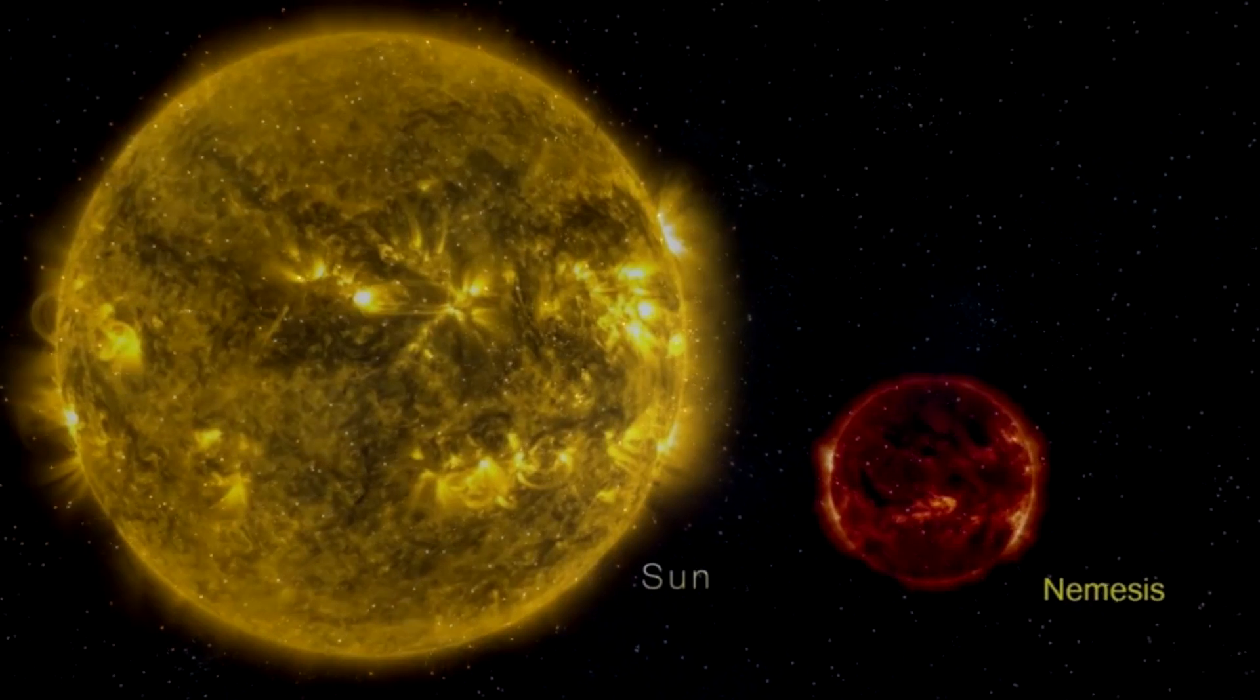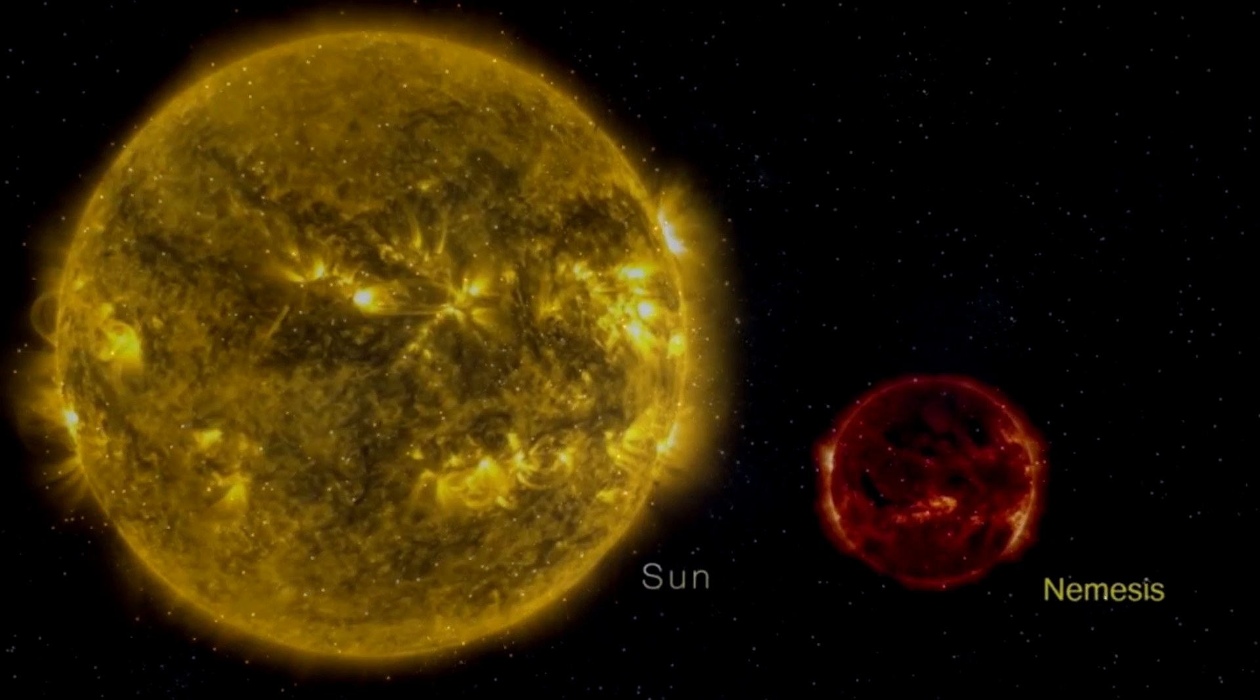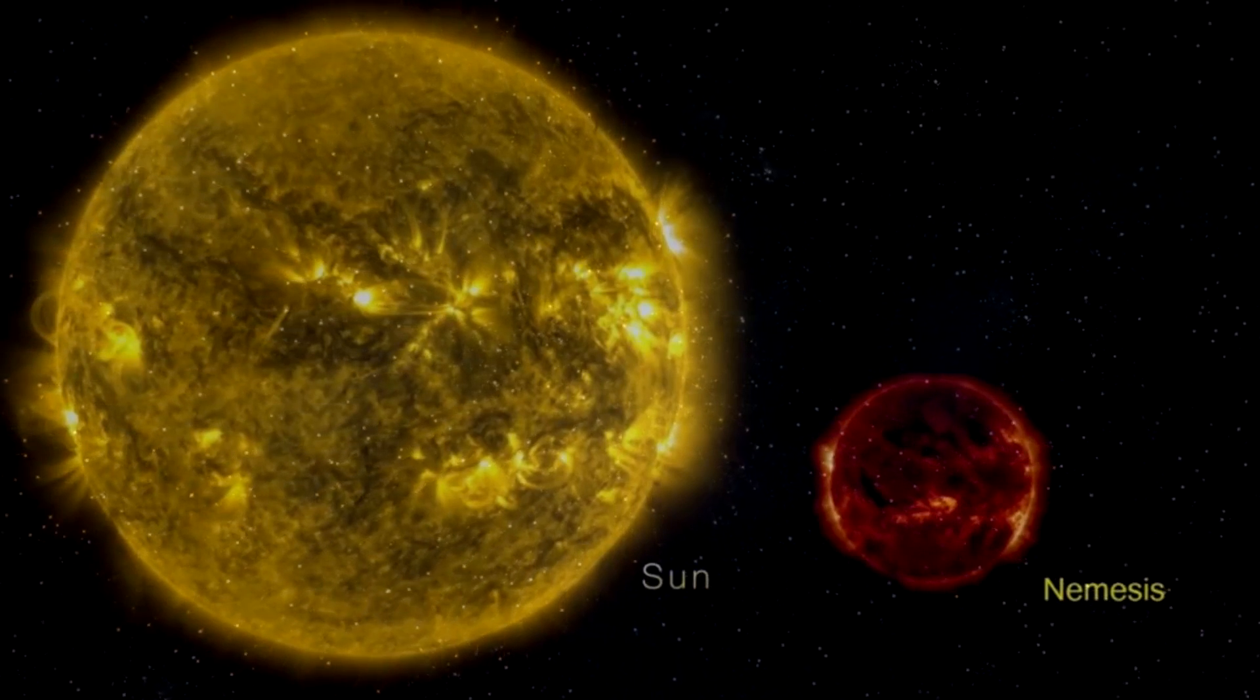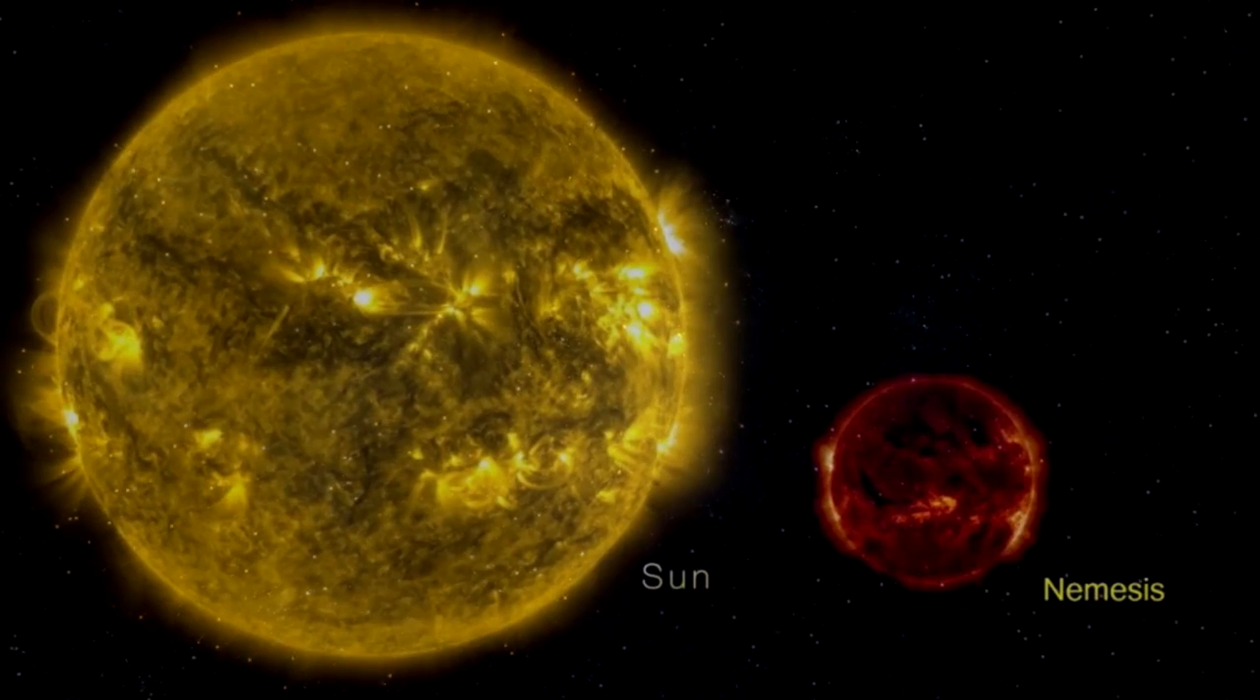And that in addition, the twin of the Sun would be very small and not bright. And for those two reasons, we would not have discovered it yet. The theory has a rational basis.